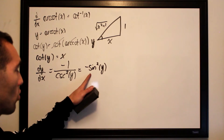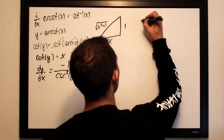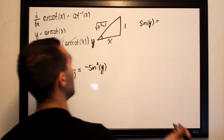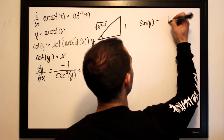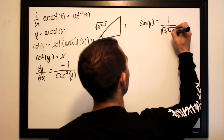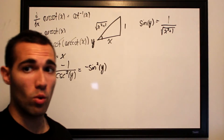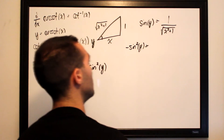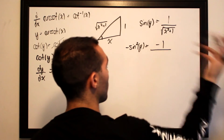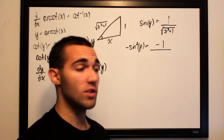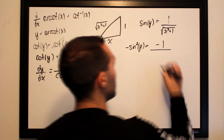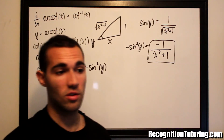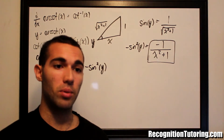We have negative sine squared of y, so using the triangle we find sine of y equals 1 over the square root of x squared plus 1. Squaring that, negative sine squared of y equals negative 1 over x squared plus 1. So the derivative of arc cotangent of x, using implicit differentiation, is negative 1 over x squared plus 1.